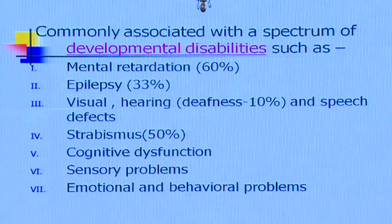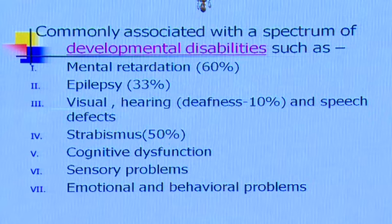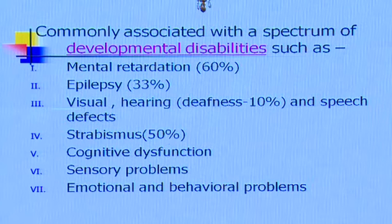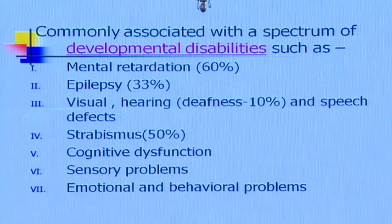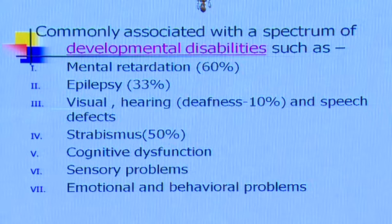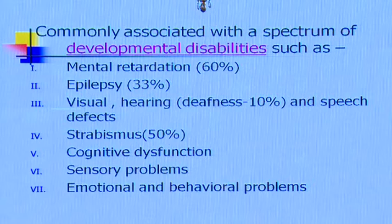Commonly associated problems with cerebral palsy include mental retardation or learning disabilities, which occur in more than 50%, epilepsy prevalent in about a third of all CP children, visual, hearing, and other sensory defects in as high as 10% or more. You can also have squint, cognitive dysfunction, sensory problems, and emotional and behavioral problems. Epilepsy is just one part of these problems.